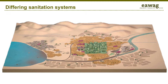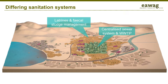Most cities have some sort of centralized sewer network, typically in the central business district and in better-off areas. The first question is to which extent this network can be realistically extended. Where this is not possible in a foreseeable future, alternative sanitation systems are needed. In large parts of cities, non-sewered on-site systems and the related services are prevalent, and these systems are often informal and unregulated.